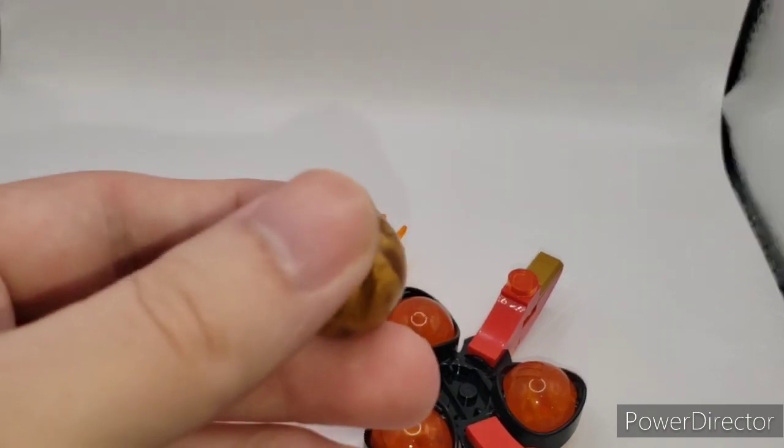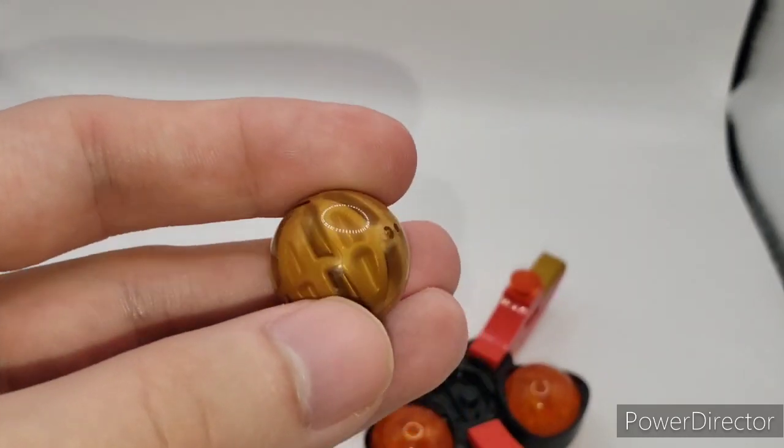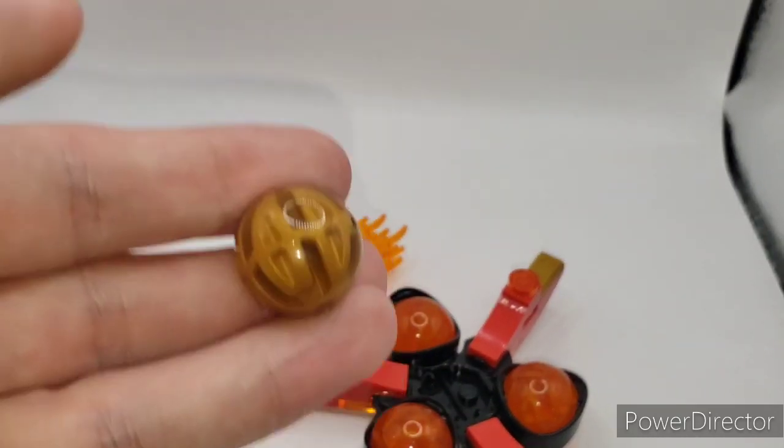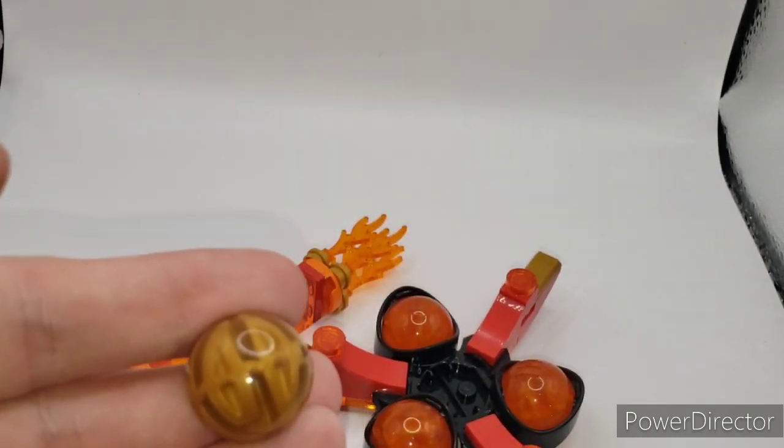So like, what you get in the set are these golden and dragon energy cores. These are not exclusive. These all come in the free sets. But yeah, let's get on to the minifigures now. All the things that you all have been waiting for.